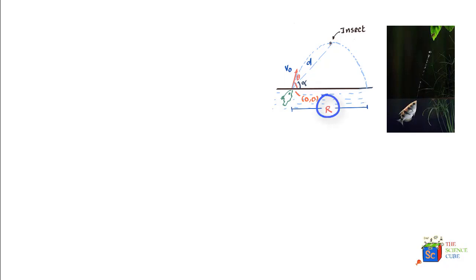Now let's assume that the coordinates of the insect are x and y. If the fish is at the origin, this distance would be x, which would be r by 2, since this is the top of the parabolic path. And y is nothing but the maximum height. So what we need to do is find the value of x and the value of y.